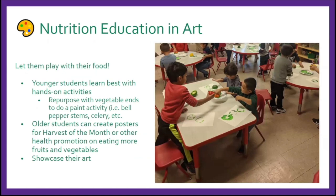Contrary to what we usually tell kids, I say let them play with their food. Younger students learn best with hands-on activities. You can repurpose vegetable ends — after snacking on bell peppers and celery — to do a painting activity. This was taken during a preschool lesson I did with an intern. The kids are having so much fun with the paint; it ends up looking like flowers, and if you use celery ends, it looks much like a rose.